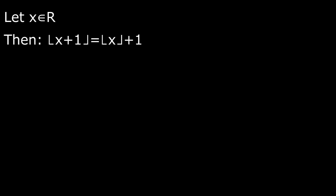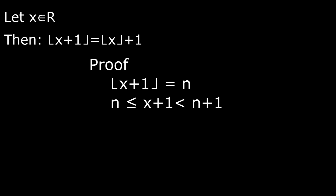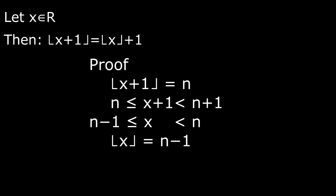Here's a theorem. Let x be an element of the reals. Then the floor of x plus 1 equals the floor of x plus 1. Since the floor of x plus 1 is an integer, you can replace the right side with just the integer n. By the definition of the floor, n is less than or equal to x plus 1 is less than n plus 1. Subtracting 1, n minus 1 is less than or equal to x is less than n. By the definition of the floor, the floor of x equals n minus 1, so n equals the floor of x plus 1. Therefore, the floor of x plus 1 equals the floor of x plus 1.